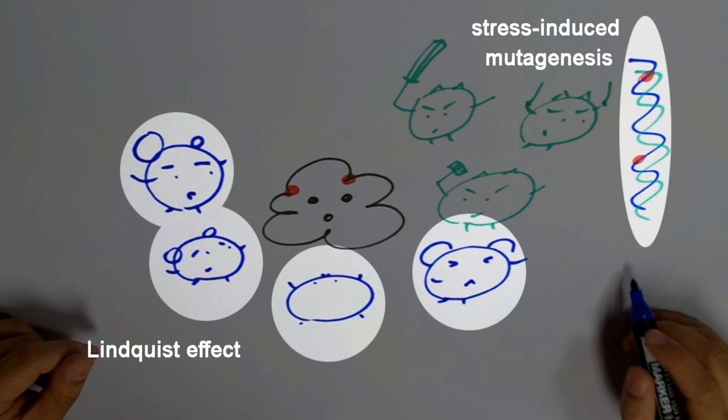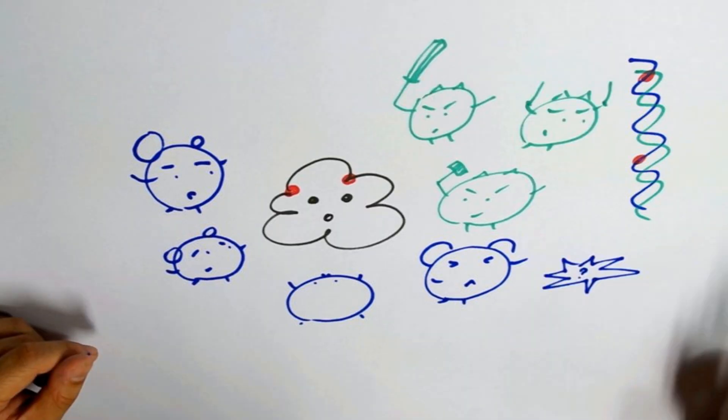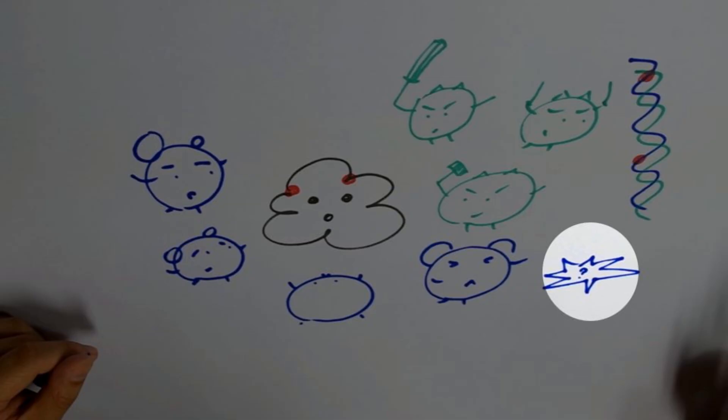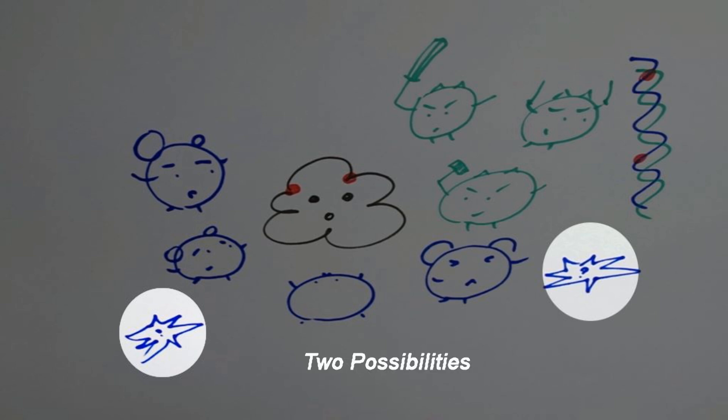Mistranslation is a source of cellular stress and the adaptive phenotypes are not due to direct alterations of protein sequences as a result of mistranslation. So, can mistranslation directly increase cellular fitness? We consider two possibilities where this might be the case.